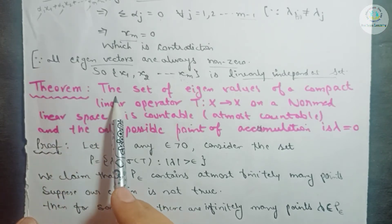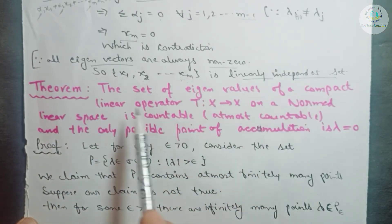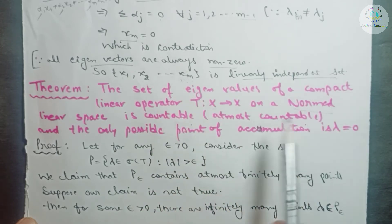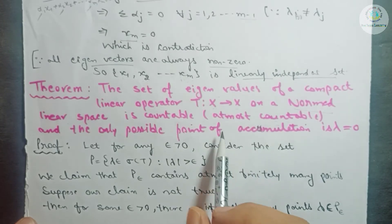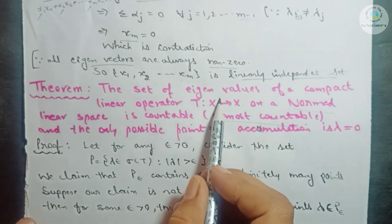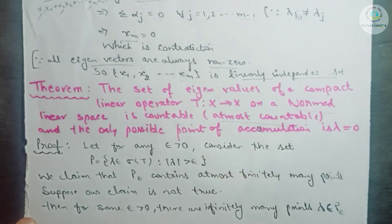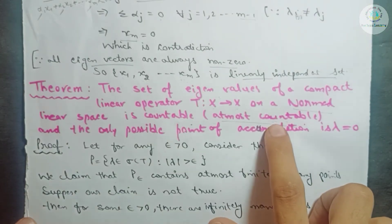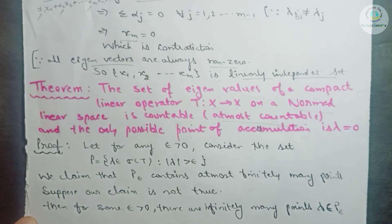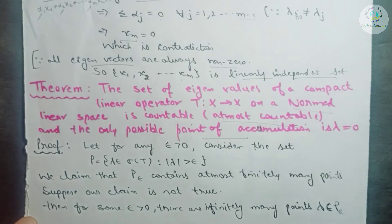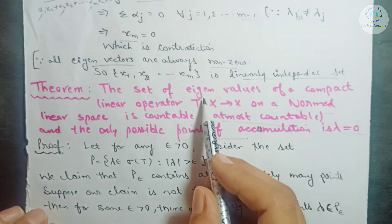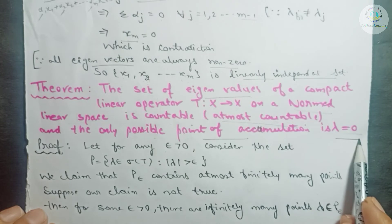Statement of main theorem: the set of eigenvalues of a compact linear operator T from X to X, where X is a normed space, is always countable — or more precisely, at most countable. At most countable means the set of eigenvalues can at most be empty; if it has elements, they form a countable set and cannot be uncountable. The only possible point of accumulation (limit point) is λ = 0.